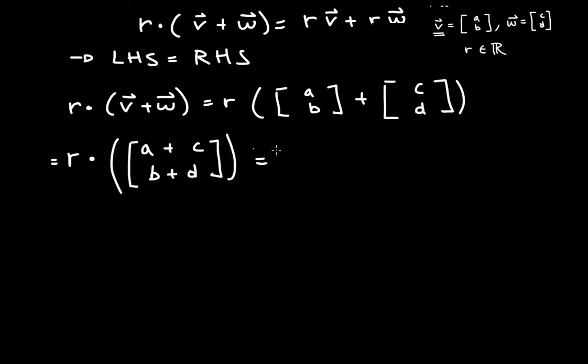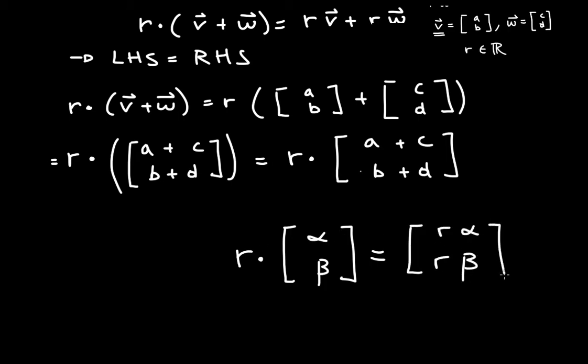Now I can get rid of those brackets. So this would be just r times [a+c, b+d]. Now, one thing that I don't want you to be afraid of is, how would you solve a problem if I was multiplying r by a vector which has components alpha and beta? You would just simply distribute it in. So this would be r times alpha and r times beta. This is scalar multiplication. So with the same logic, we can apply it right over here.